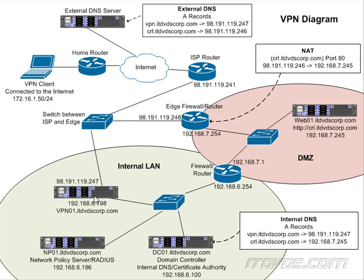So what is split tunneling? When our VPN client connects to our VPN server, that creates a tunnel where information is normally encrypted and travels through the internet. By default, our VPN client is going to be configured to pass all web traffic through that tunnel.